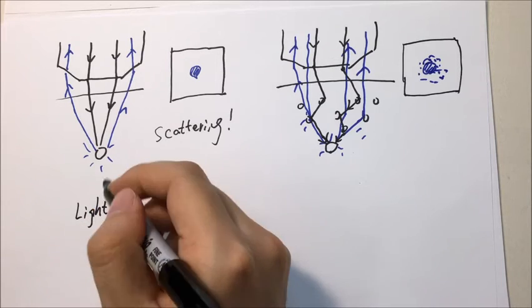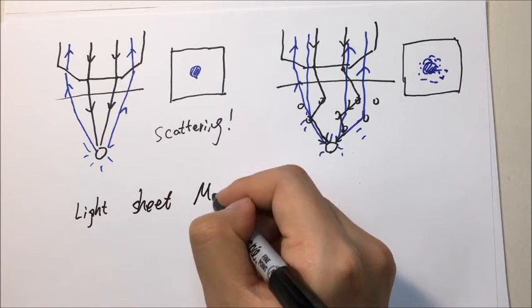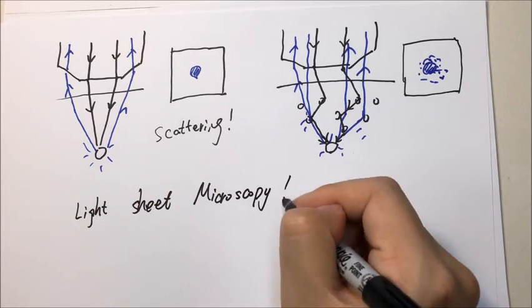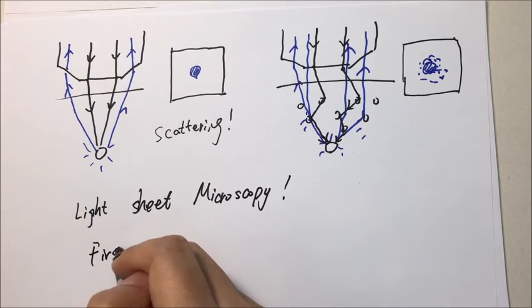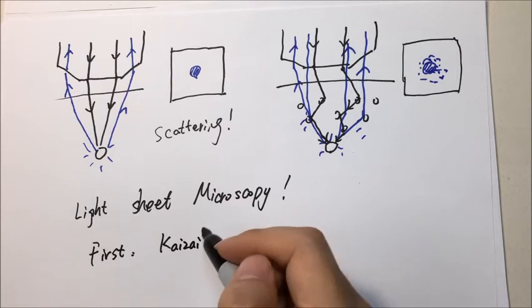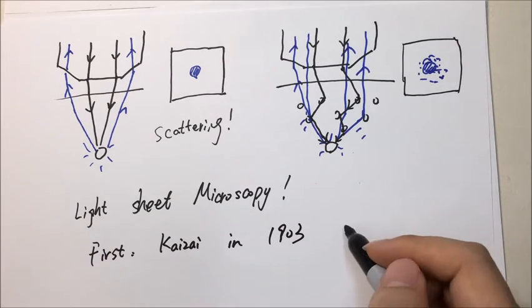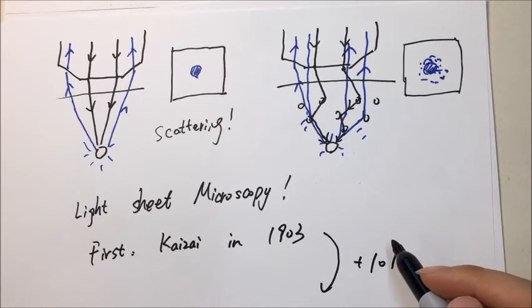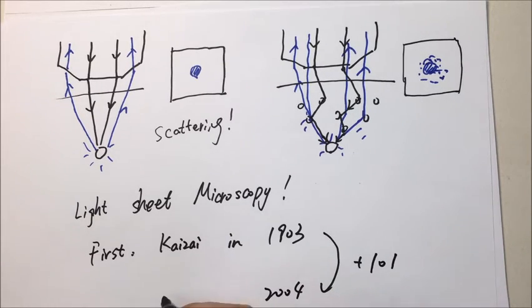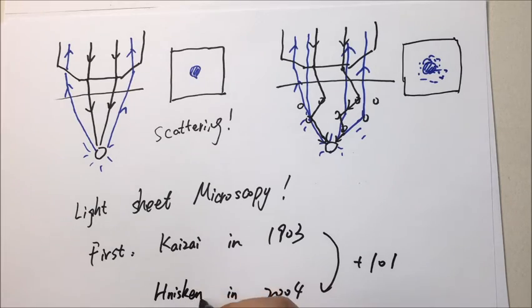One technique to solve this problem is light sheet microscopy. And this is what I will introduce in this video. Surprisingly, this technology was originally developed in 1903. However, 101 years later, it was rediscovered for 3D fluorescent imaging in biology.